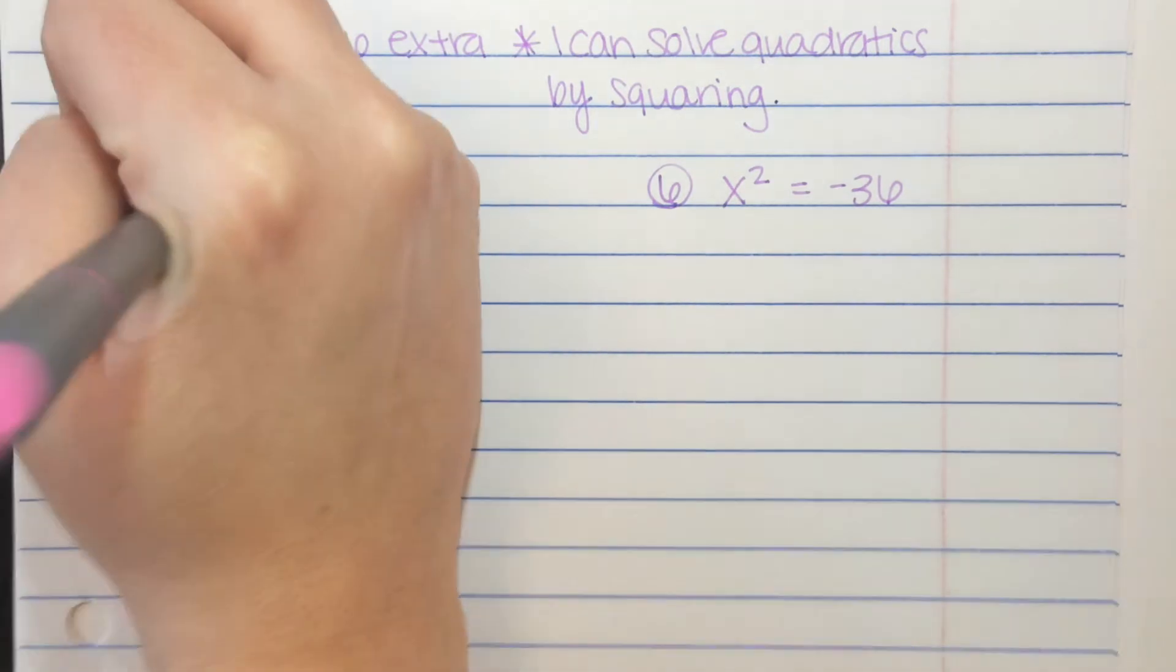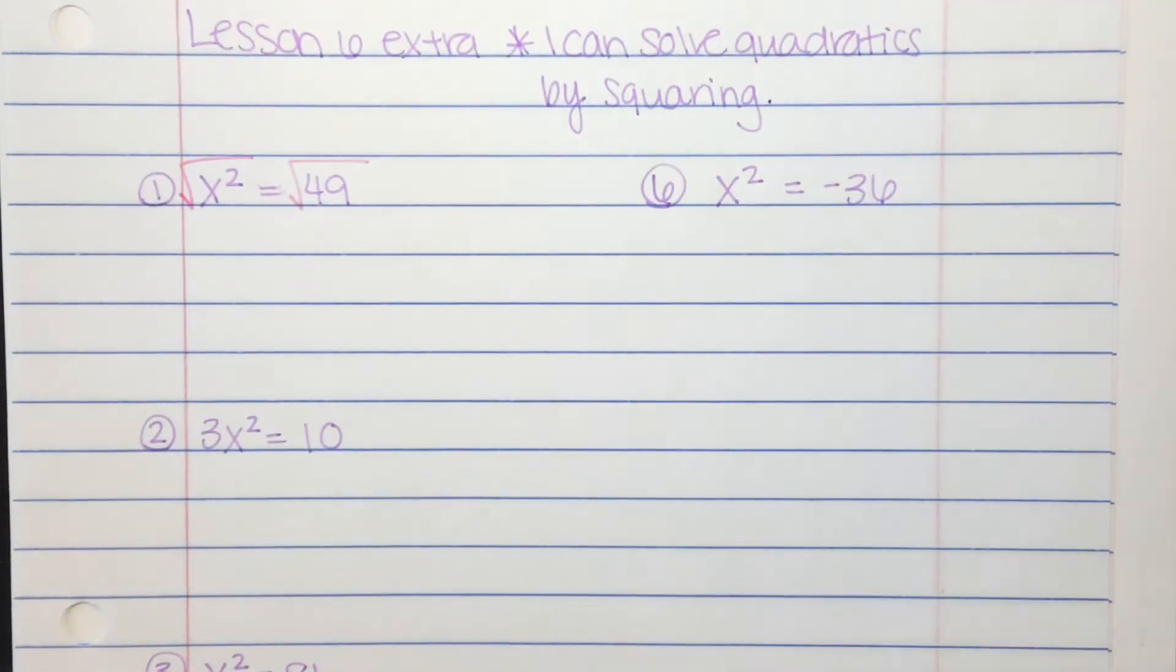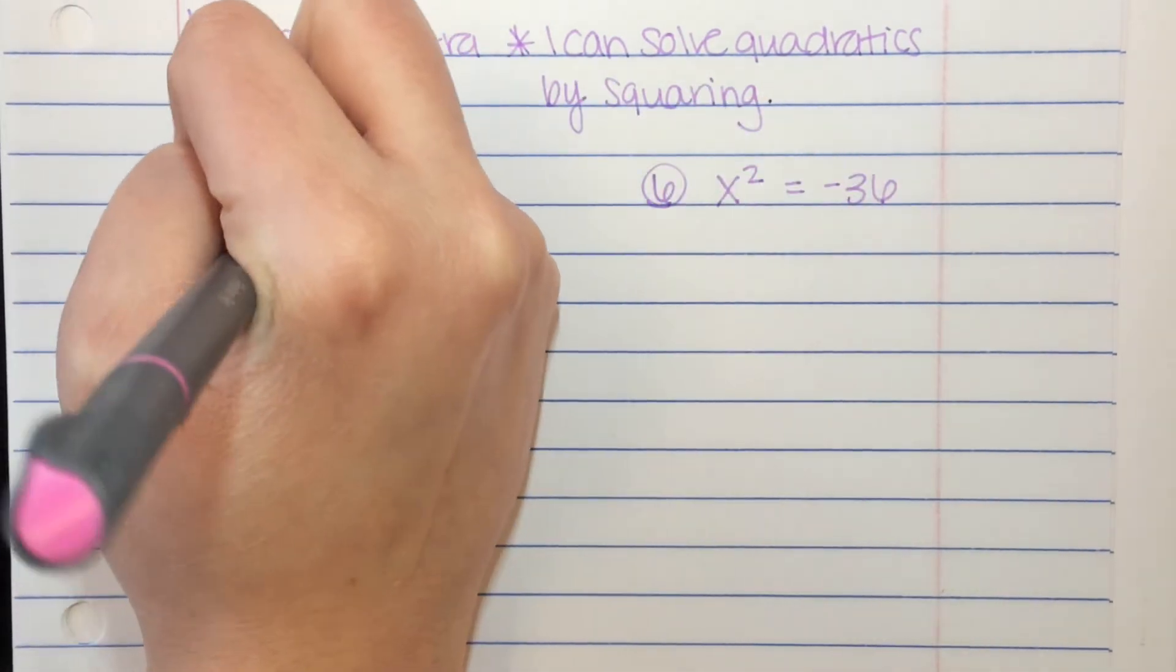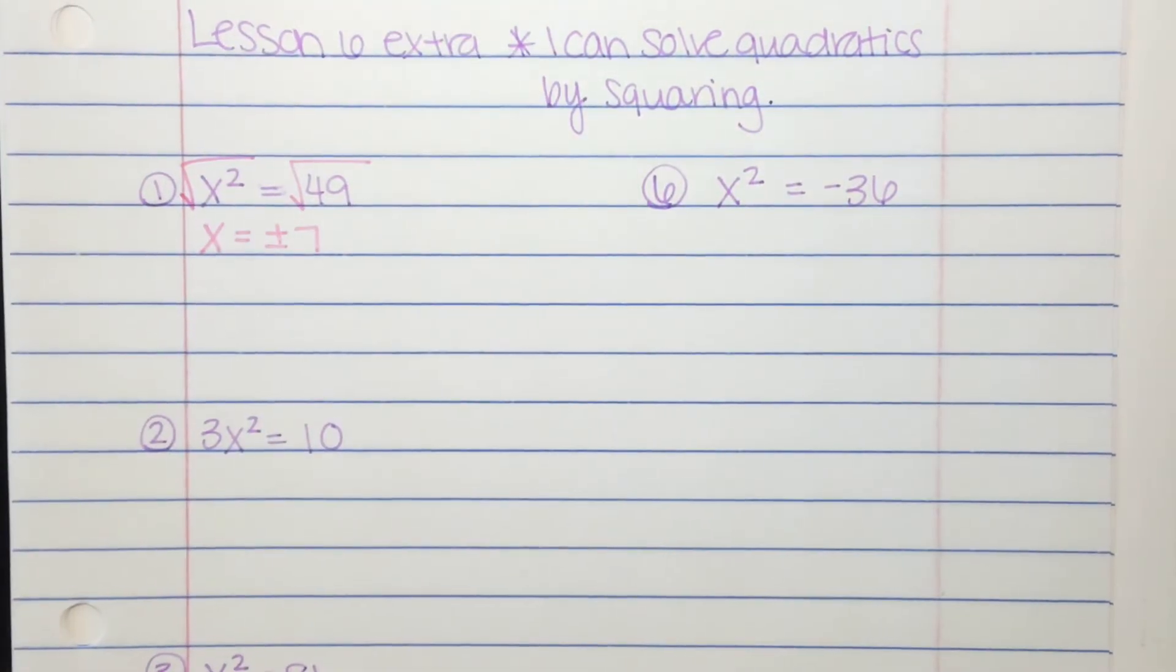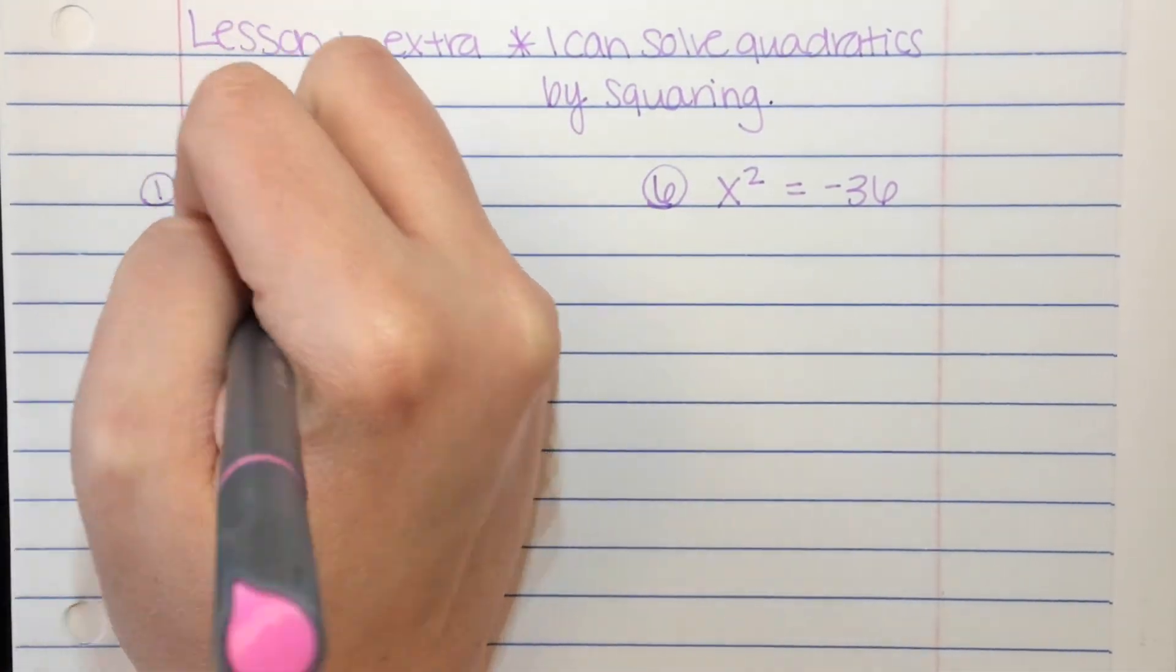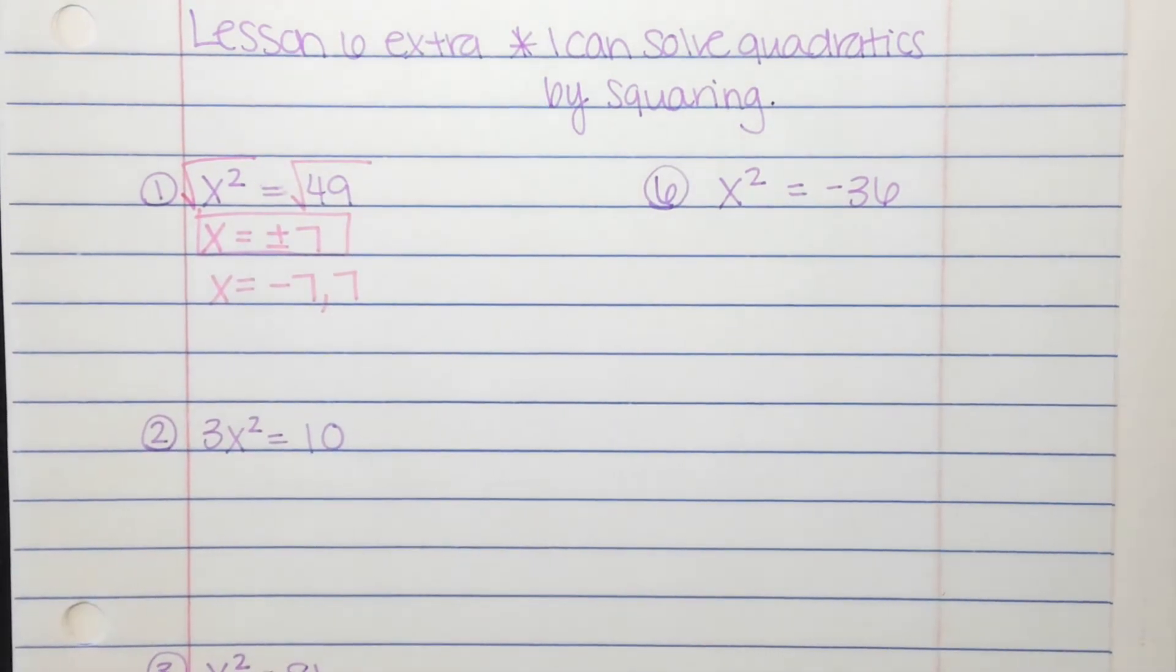Take the square root of both sides. The square root of x squared is x, the square root of 49 is plus or minus 7. So you can have your answer like this. In Math Excel, you can also do negative 7 comma 7. Either one of those will work.